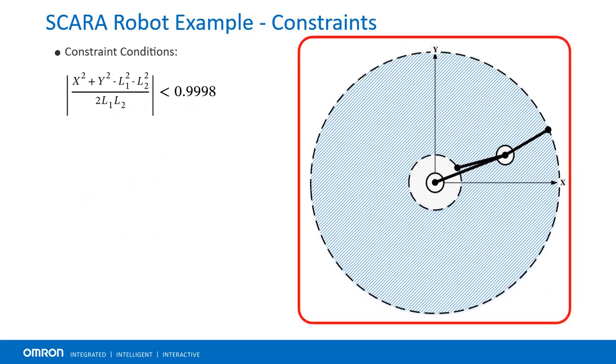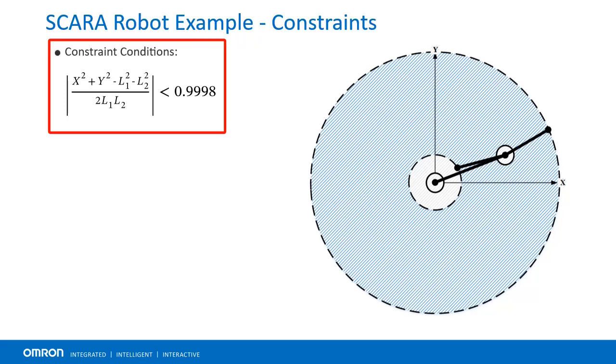It is also important to be aware of your robot's constraints. In this case, the robot can only move within a washer-shaped range of motion due to its mechanics. Some margin should be added to constraints in order to prevent the robot from reaching the boundary, as this could make it hard to control.